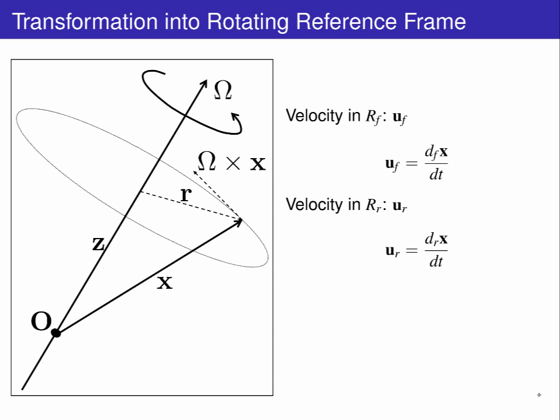To relate the two frames of reference, one fixed and one rotating, it is best to consider their movement relative to each other. For a vector x, this becomes two velocities: the rate of change of x in the fixed frame, U_f, and in the rotating frame, U_r.